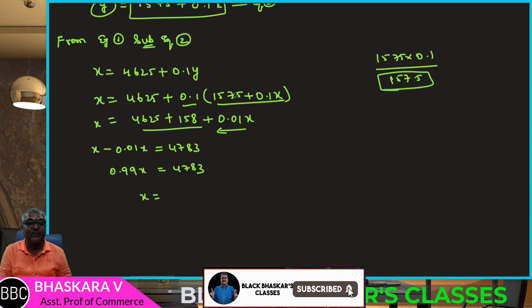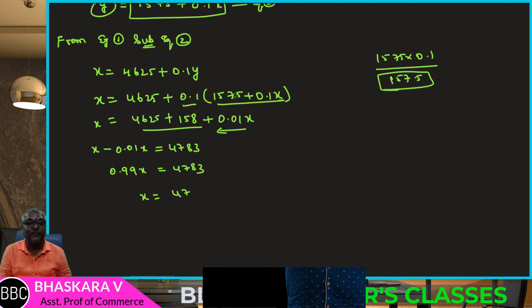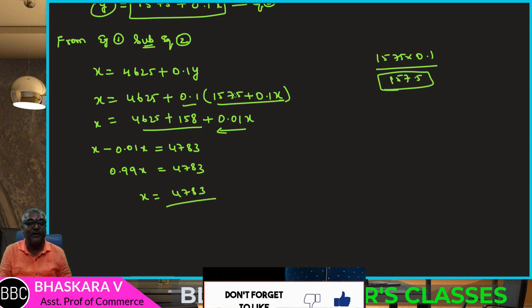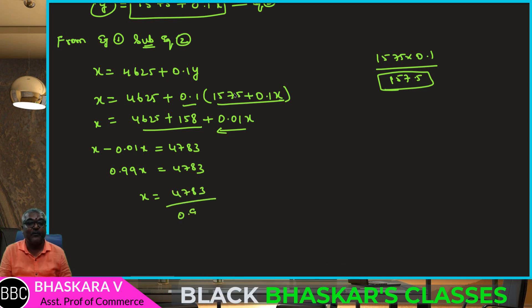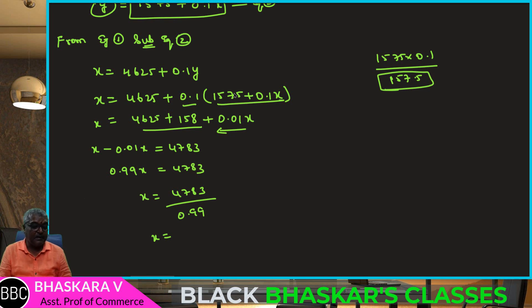Therefore X equals 4,783 divided by 0.99, which gives X equals 4,831. So the total overheads of Department D is 4,831.